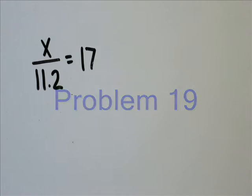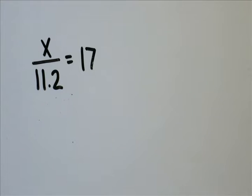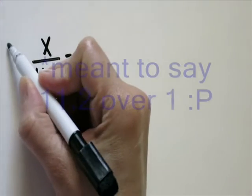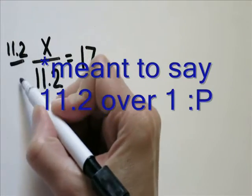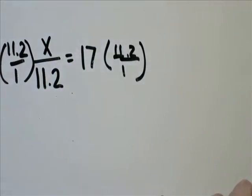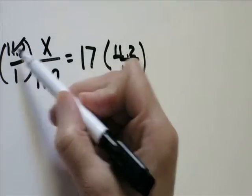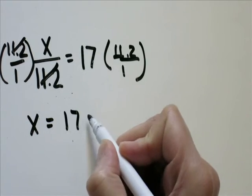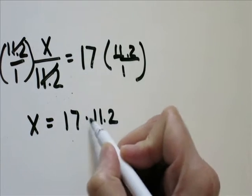Next problem, x over 11.2 equals 17. There are two ways you can go about solving this. I'm going to show you each way. The first one is you'll take 11 over 2 and multiply that by each side because you want these to cancel out, giving you x equals 17 times 11.2.